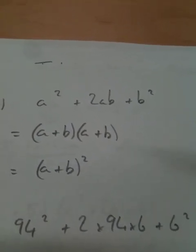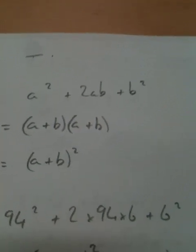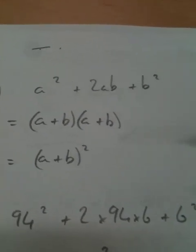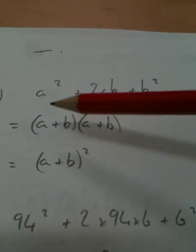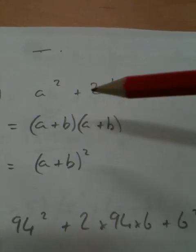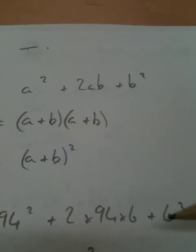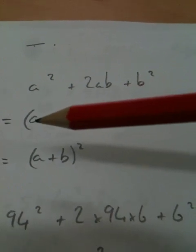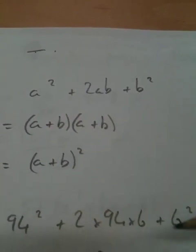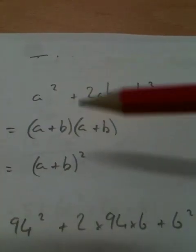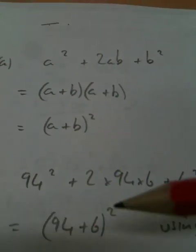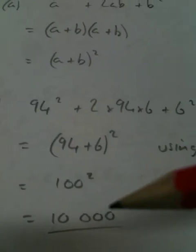So, hence or otherwise, find the value of 94 squared plus 2 times 94 times 6 plus 6 squared. Hence or otherwise. In other words, use what we've got up here. Look, 94 squared, A squared. 2 times 94 times 6. 2 times A times B. 6 squared, B squared. Basically, put 94 in for A, put 6 in for B. It's just substituting back into what we've just done. Matching it up. So, 94 add 6 is 100. 100 squared, 100 times 100 is 10,000.